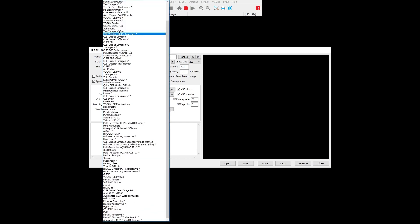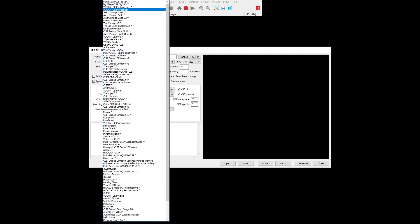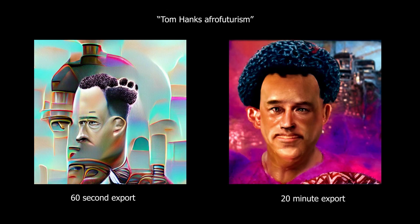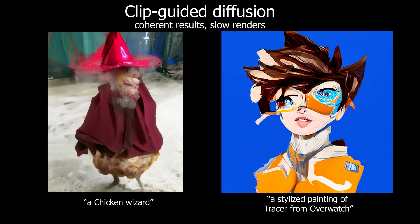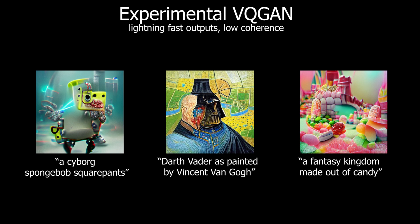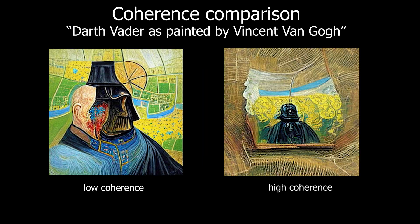There are about a zillion models with different approaches to image building. Some are faster, some are slower; some will create images that are shockingly coherent, while others make pictures that are a little more fever dreamy. Generally, coherence and image size require substantially slower exports, but models are getting better and better at building their outputs more quickly.